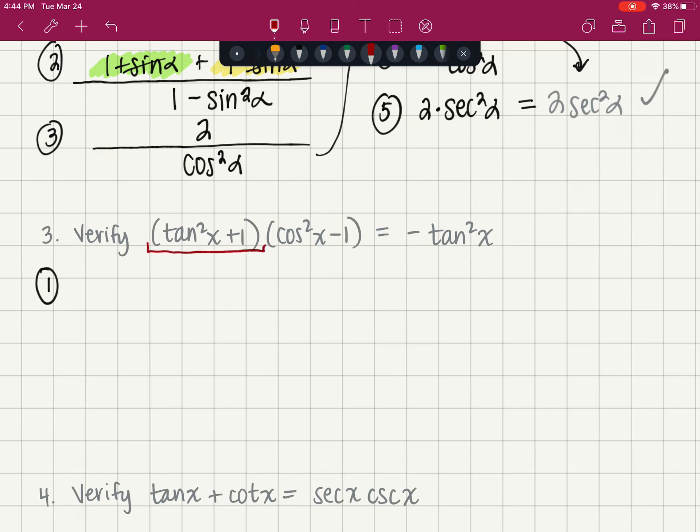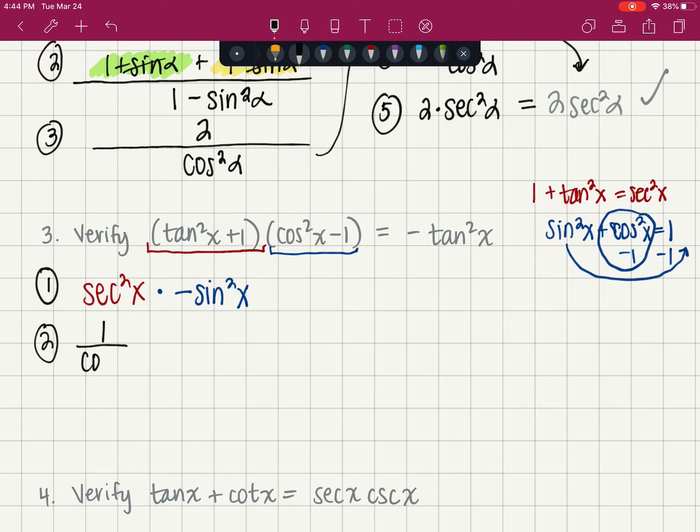I am going to take tangent squared plus one, that's I tan by the C, and I'm going to substitute in secant squared of x. And then cosine squared minus one, sine squared plus cosine squared equals one. If I subtract one from both sides, I'll have the cosine squared minus one, but then I have to subtract sine squared. So that's the same thing as negative sine squared of x. And then step two, I'm going to take this secant squared and make it one over cosine squared times negative sine squared.